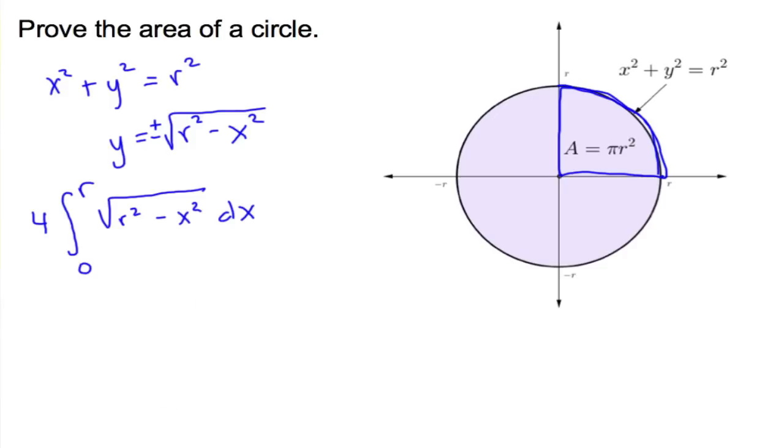Alright, so I'm going to do a substitution called a trigonometric substitution, so I'm going to let x equals r sine theta, which means dx, the derivative of x, is going to be r cosine theta d theta. So now I can substitute both of these.